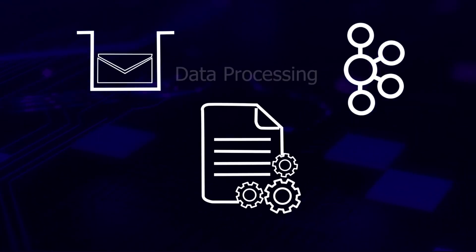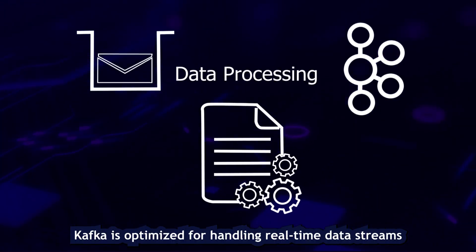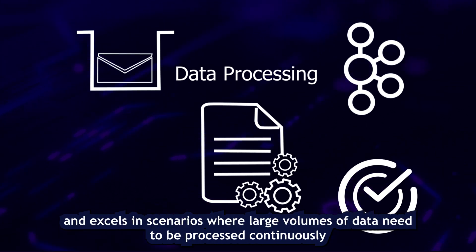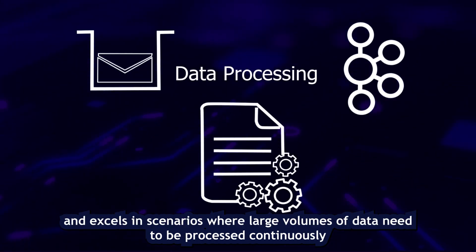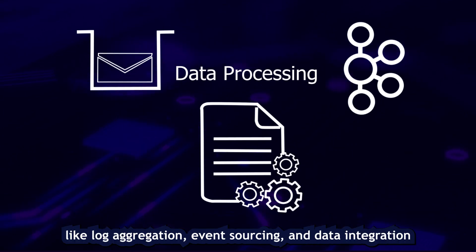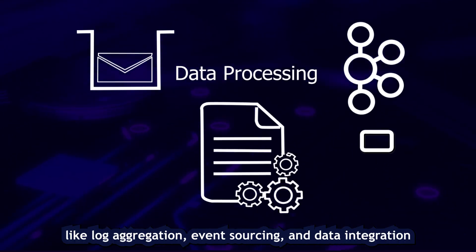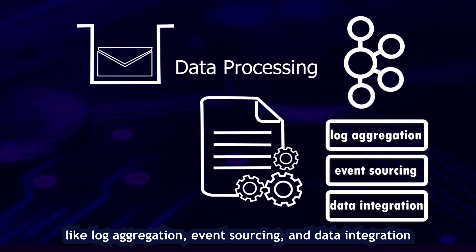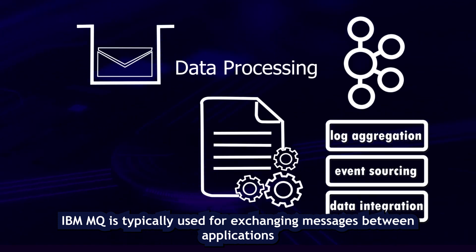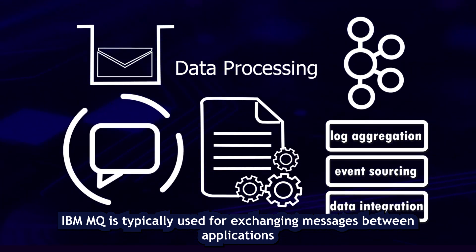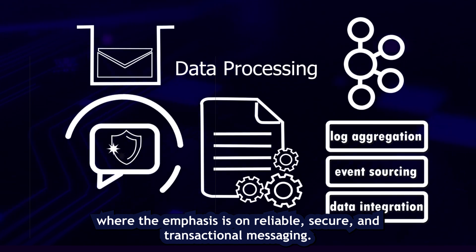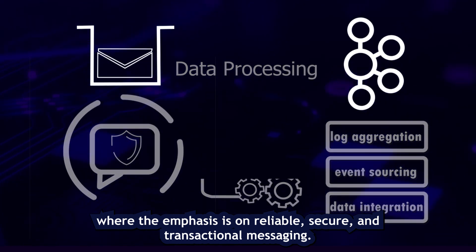Data processing: Kafka is optimized for handling real-time data streams and excels in scenarios where large volumes of data need to be processed continuously, like log aggregation, event sourcing, and data integration. IBM MQ is typically used for exchanging messages between applications, where the emphasis is on reliable, secure, and transactional messaging.